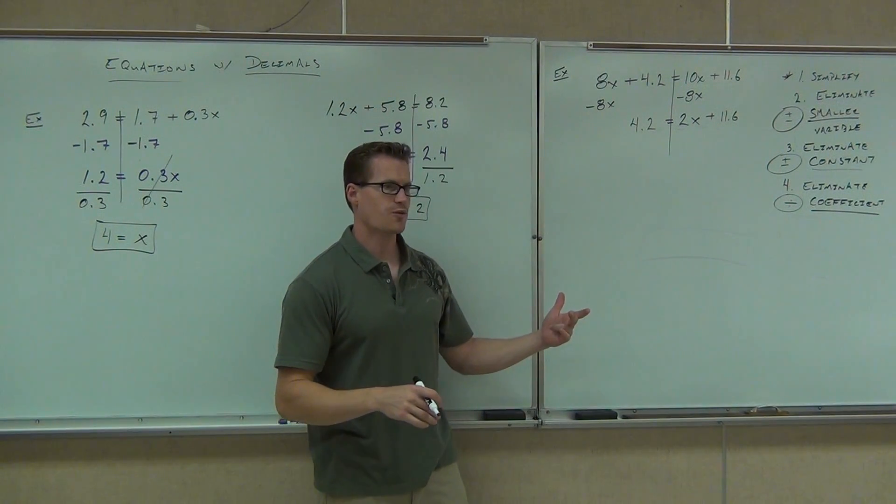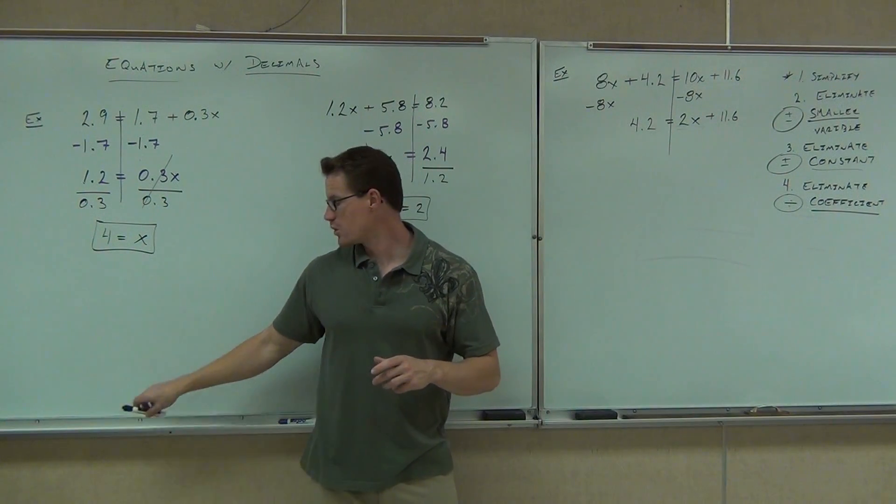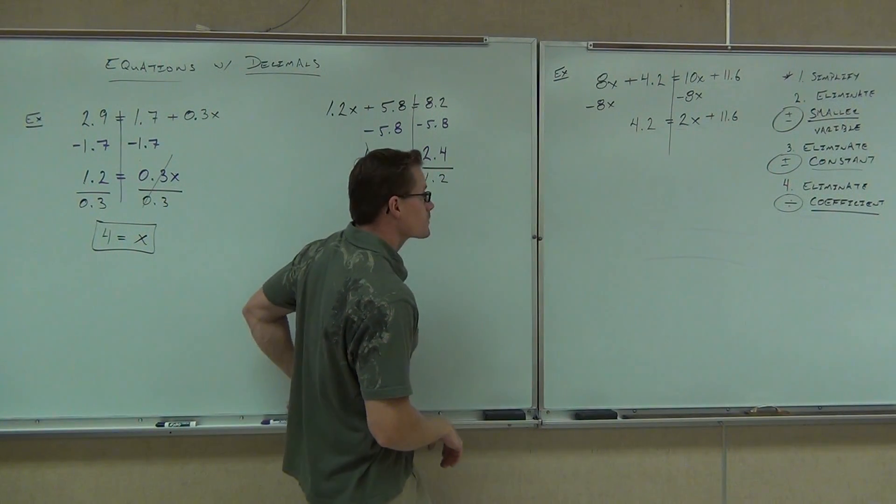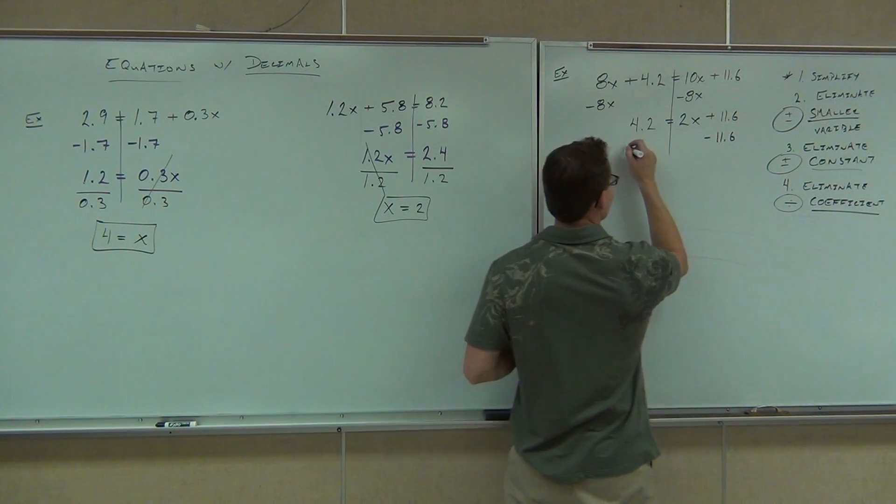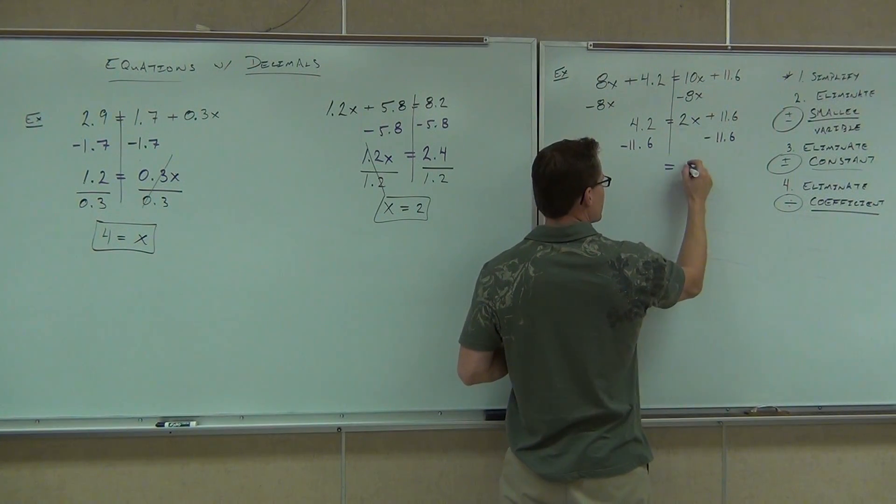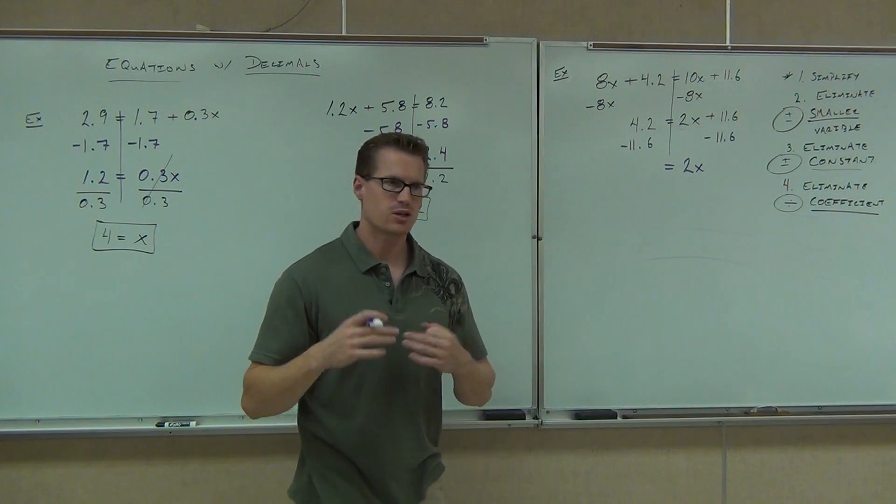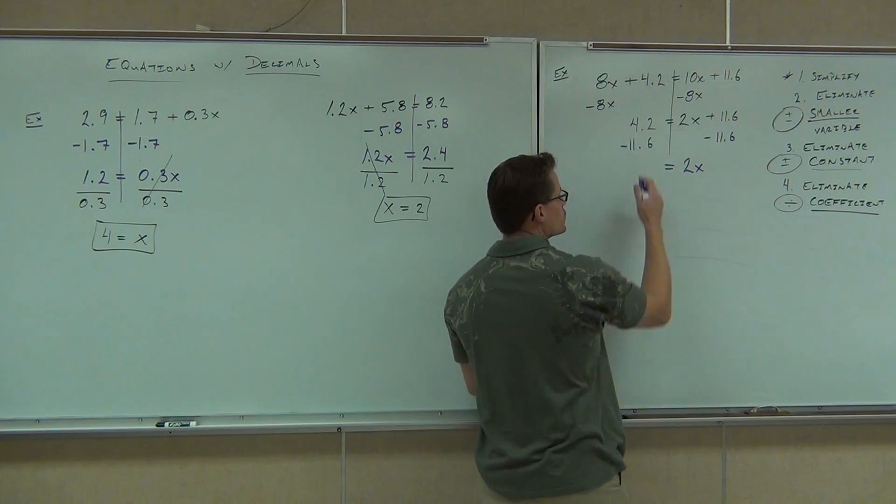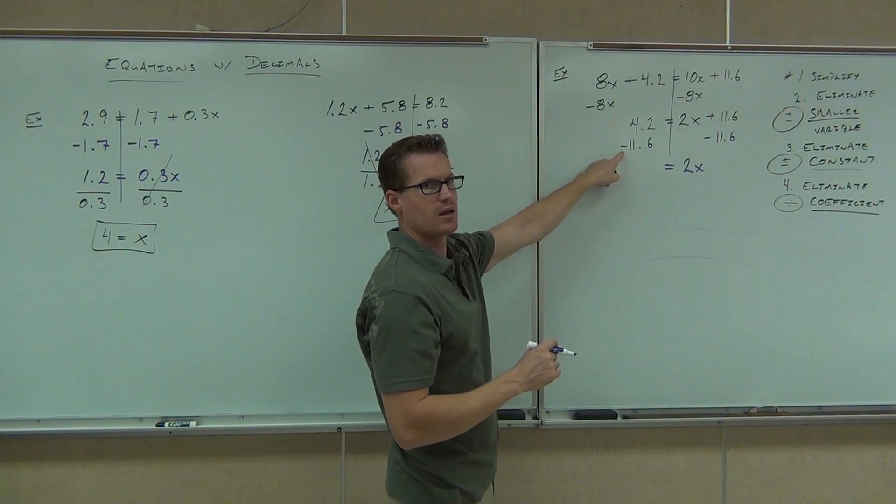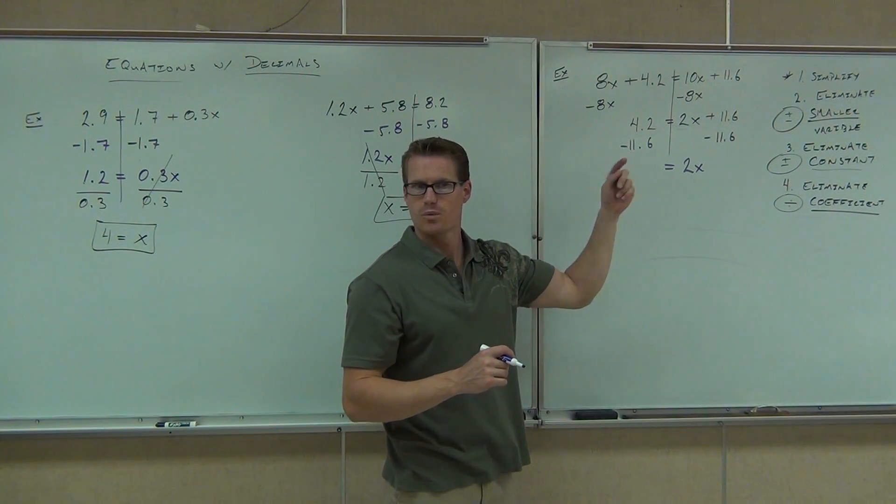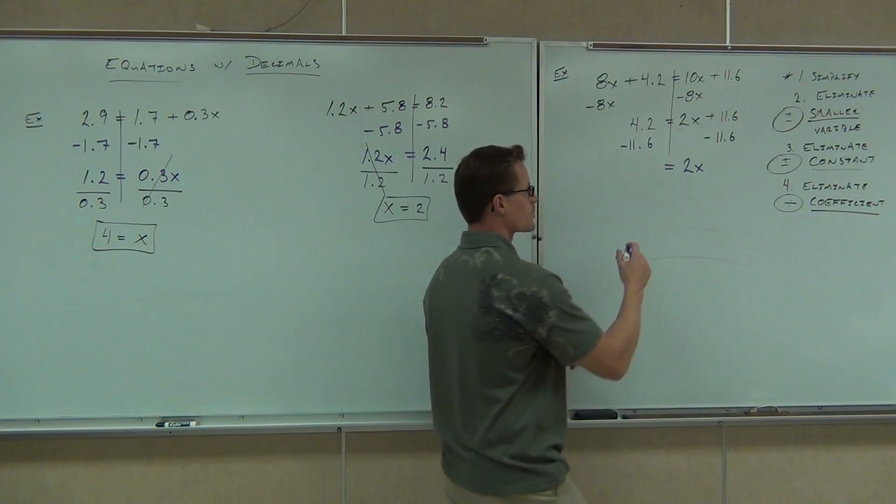You're going to get rid of your constant term first. What's your constant term here? 11.6. So how are you going to get rid of 11.6? Okay. On the right side, I know I'm going to get 2x. On the left side, don't be afraid to do that work off to the side. If you try to do it in your head, maybe that's where you make a mistake. I don't know. We're doing 4.2 positive, 11.6, and we're subtracting that. The signs are different. Do you follow? We're subtracting. We're doing an addition rule here because we're adding subtracting. So our signs are different. That means we're going to subtract.